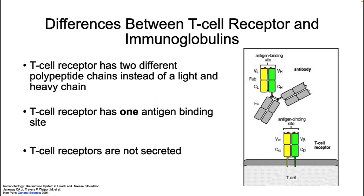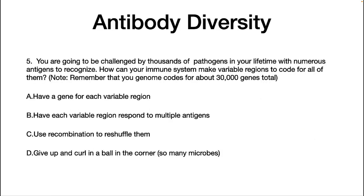There are also differences between T cell receptors and antibodies. T cell receptors have two different polypeptide chains instead of light and heavy chains. Second, T cell receptors have only one antigen-binding site. Third, T cell receptors are not secreted, in contrast to antibodies. Since they are similar in structure, the creation of their diversity during development follows a similar pathway.